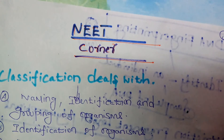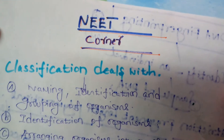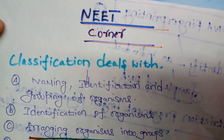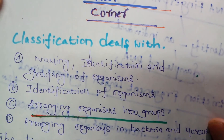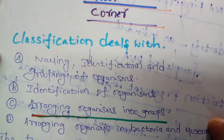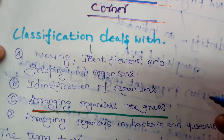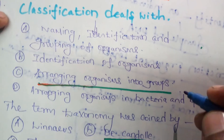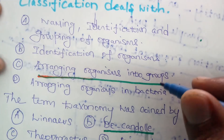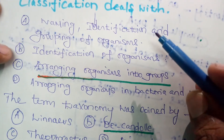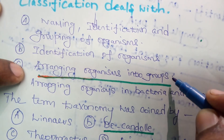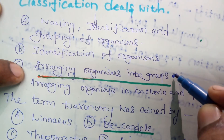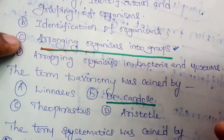Okay friends, now we have a corner of questions. What is the question? Classification deals with arranging, naming, identification, and grouping of organisms. Arranging the organism into organized groups — that is what classification mainly deals with.